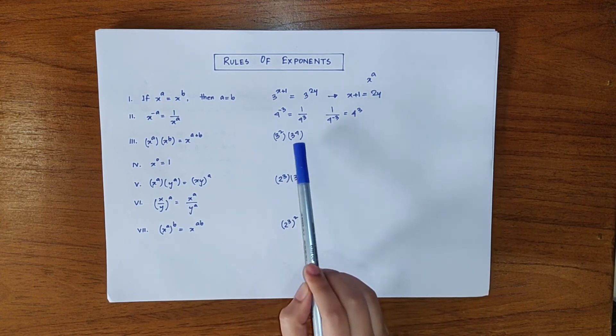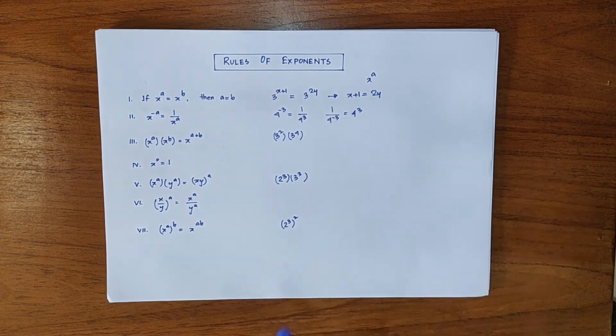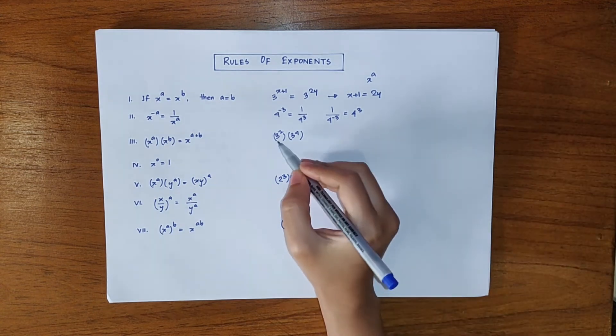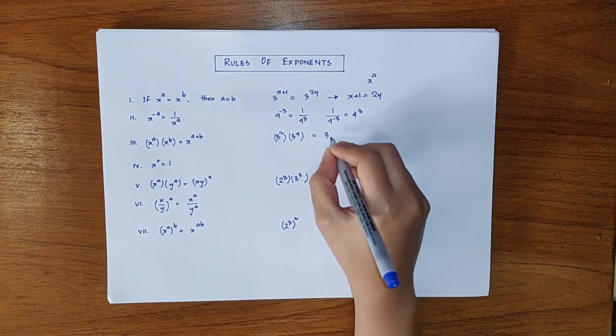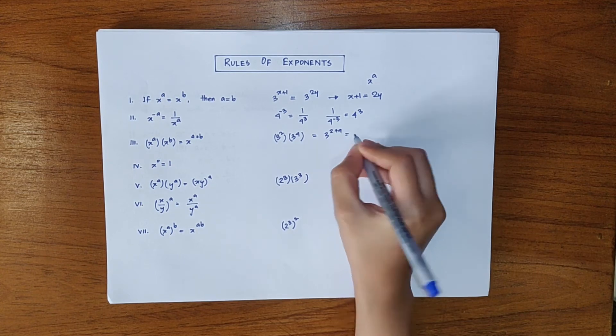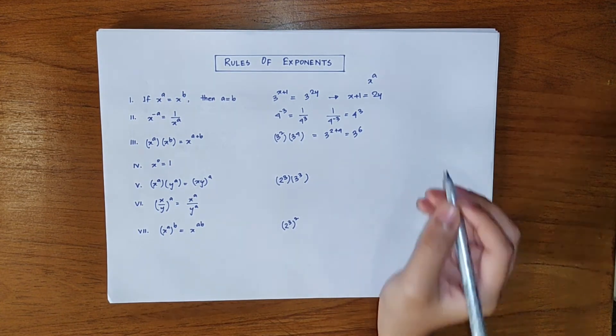Now we have two numbers 3 square and 3 to the power 4 multiplied together. Their bases are same. So according to the formula their powers will be added and the result will be 3 to the power 6.